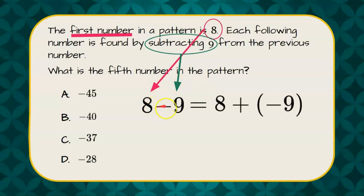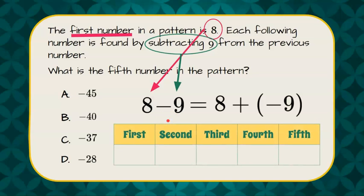So we can rewrite 8 subtract 9 as 8 add the opposite, so 8 add negative 9. Now I'm going to use a table as my strategy to organize my work.